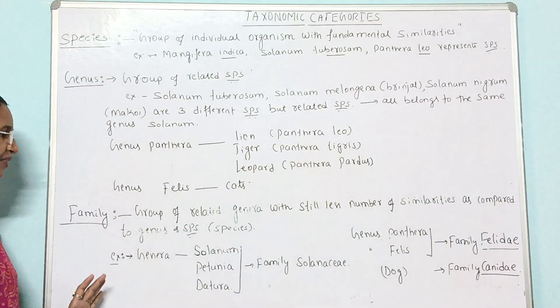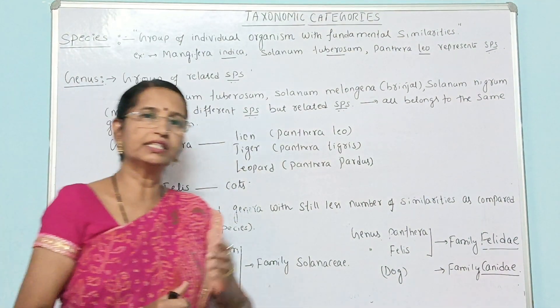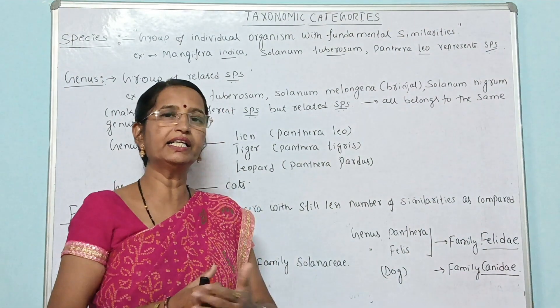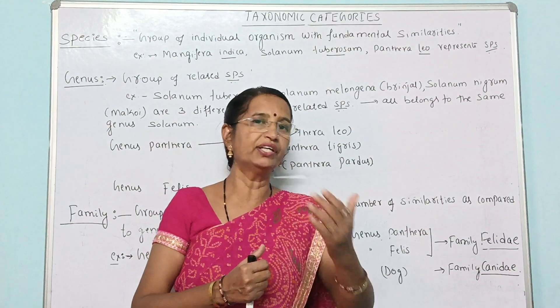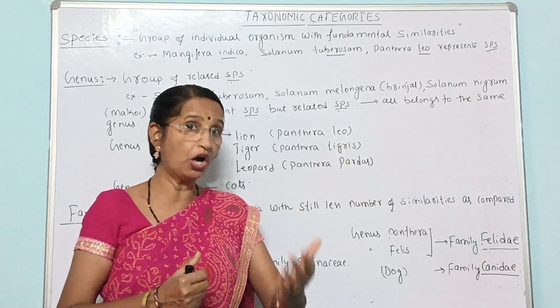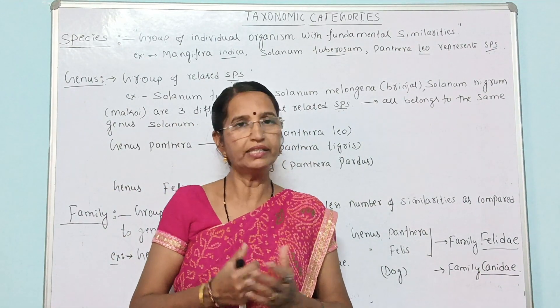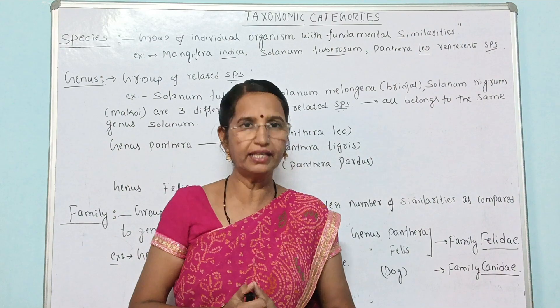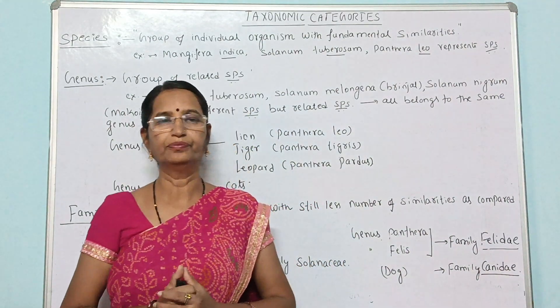With this example we will stop here. The next category — the next level of taxon in classification — is Order. How Order is formed, we shall discuss in the next video. See you then.